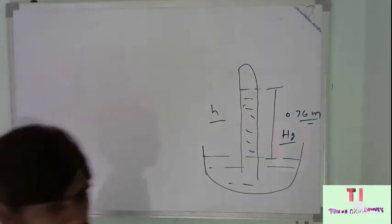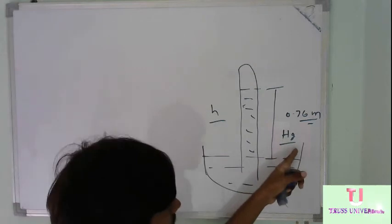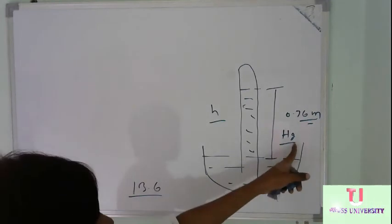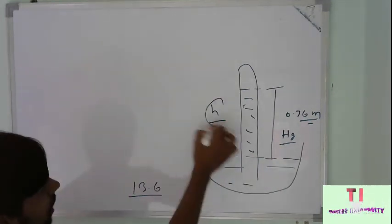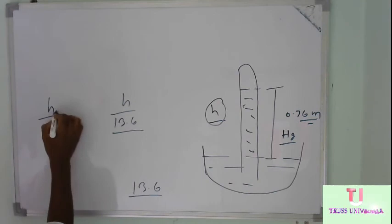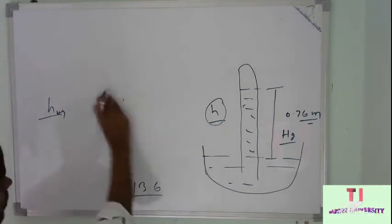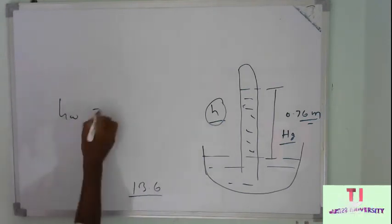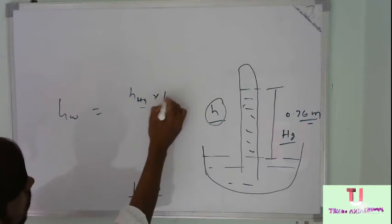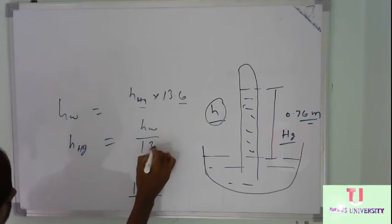What is the expression for it? Very simple. This only depends on the specific gravity. Since the specific gravity of mercury is 13.6 times higher than water, the pressure head in water will be h multiplied by 13.6, where h is the mercury head (hg). And conversely, hg will be hw divided by 13.6.